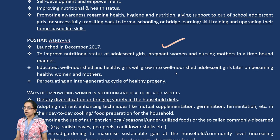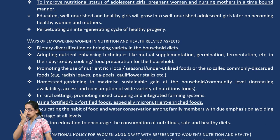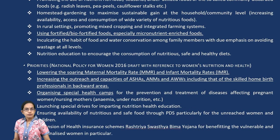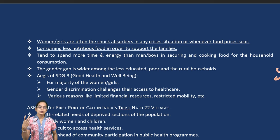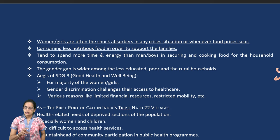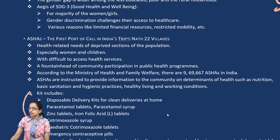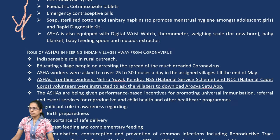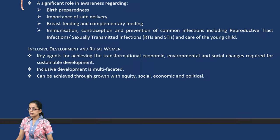Poshan Abhiyan promotes the healthy well-being of the girl child. Various aspects focus on diets, micro-nutritional requirements, and how those can be addressed through special health camps, checking maternal mortality rate and infant mortality rate, and making nutritional diets a major component of normal diet. ASHA workers play a critical role by providing healthcare services through various means, and during COVID-19 they have been involved in awareness programs and volunteering.